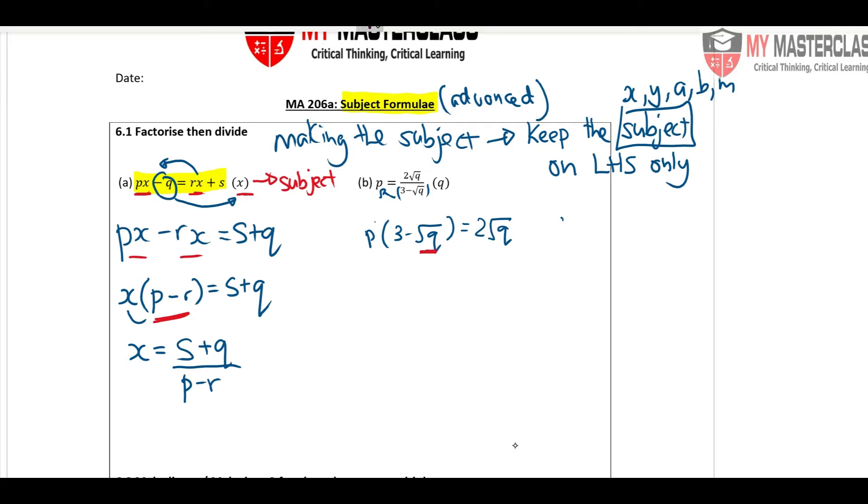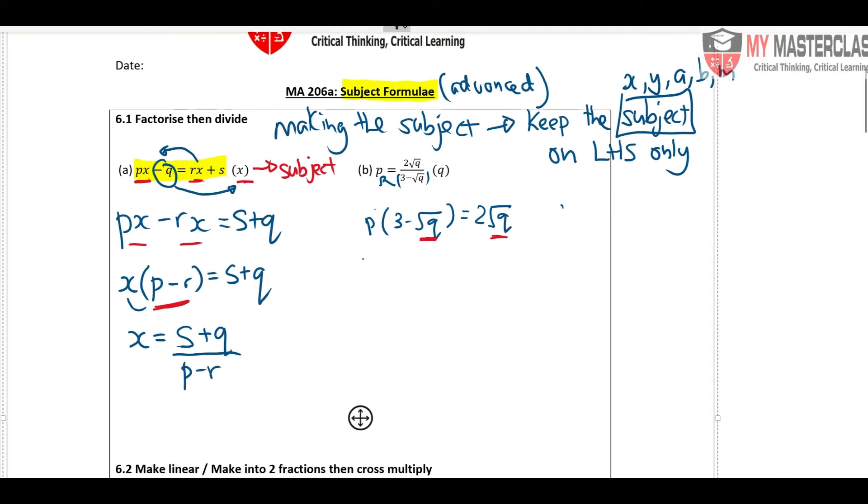Next we expand because we want to bring all the square root Q to one side. Now this square root Q is inside here and this square root Q is here. The one that is inside here is very troublesome, so we need to bring it out. This would make 3P minus P square root Q. What did I do? I just distribute. It equals to 2 square root Q.